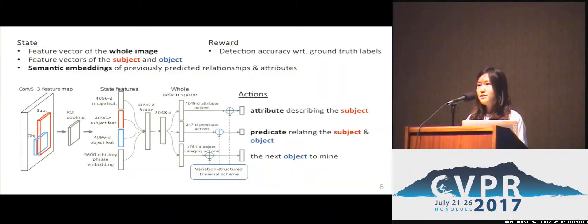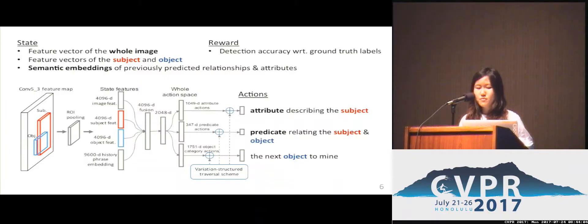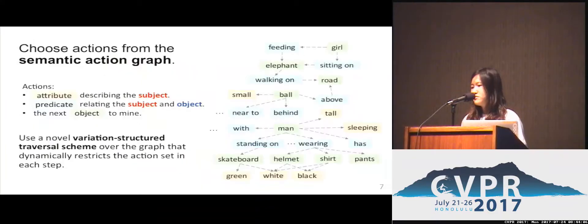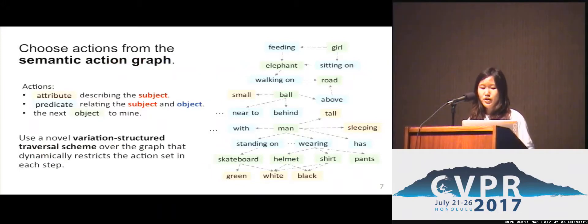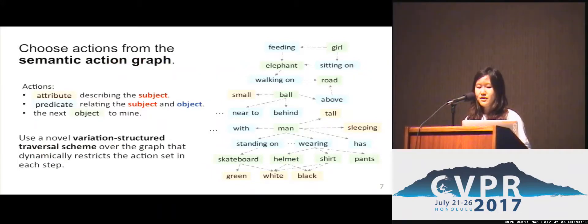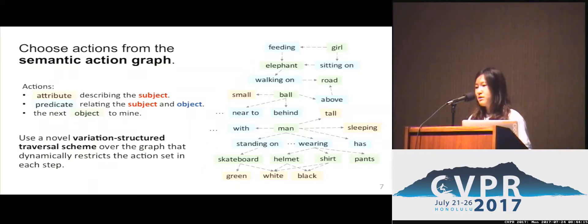The reward is the detection accuracy with respect to the ground truth labels. A potential problem is the huge action space, which can make the learning too slow. To reduce the number of candidate actions, our model chooses actions from a semantic action graph.